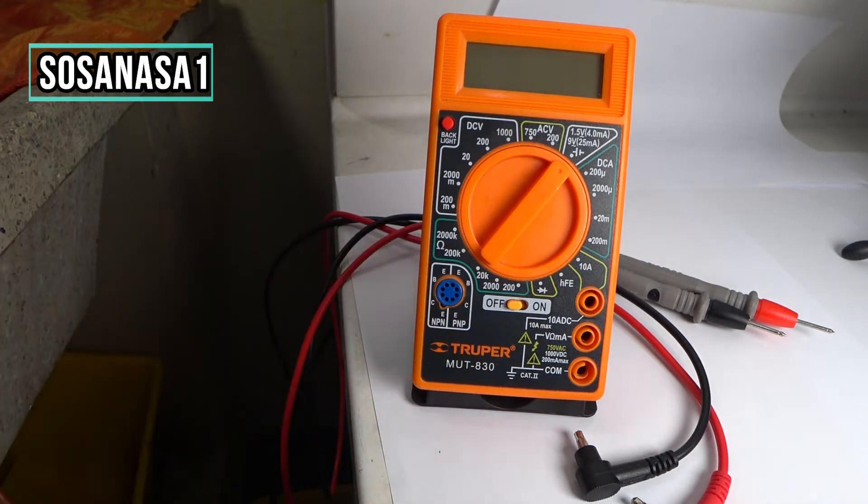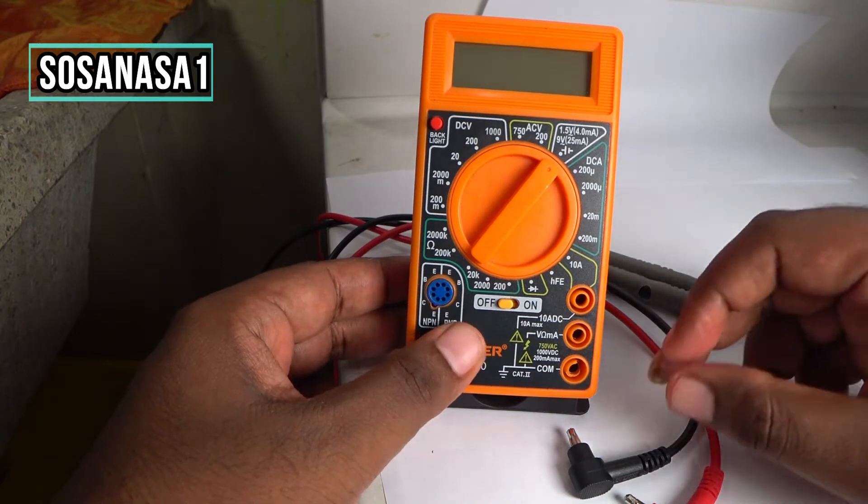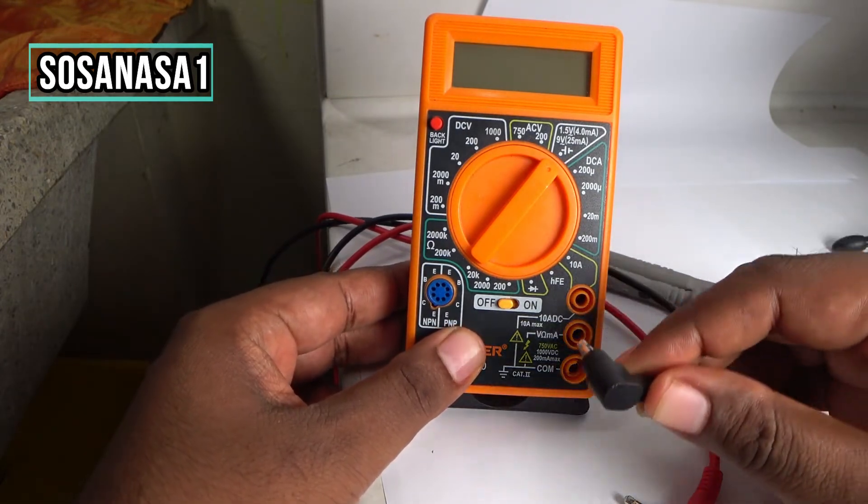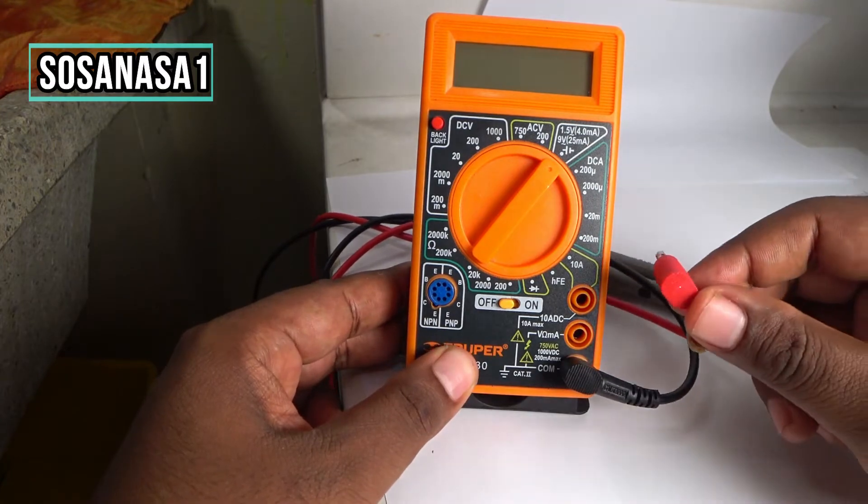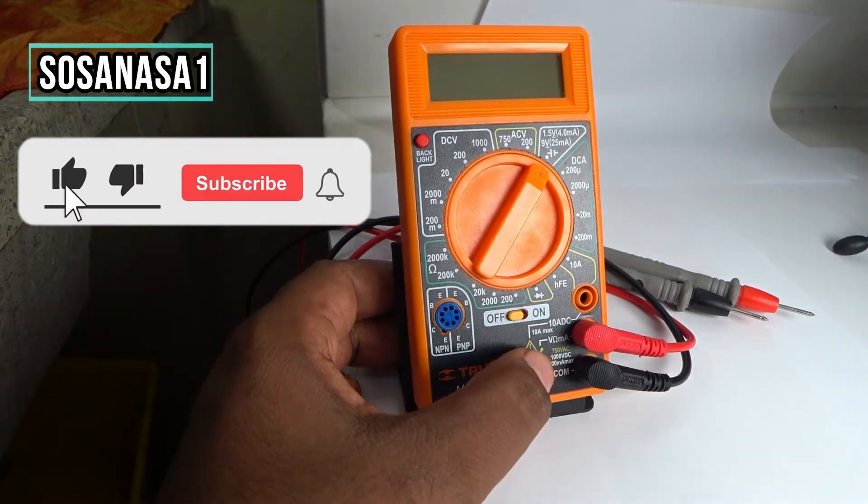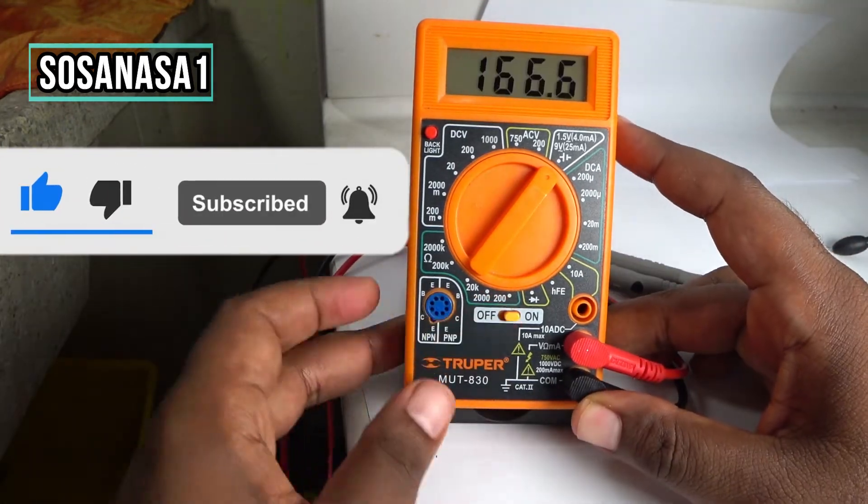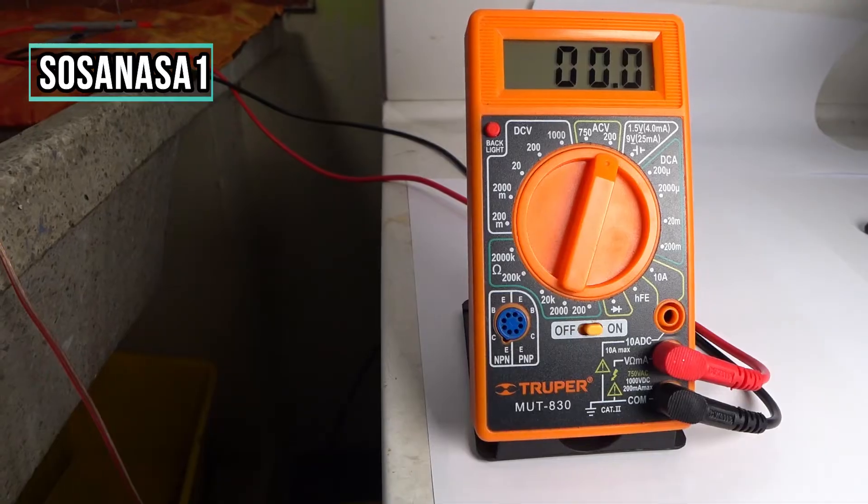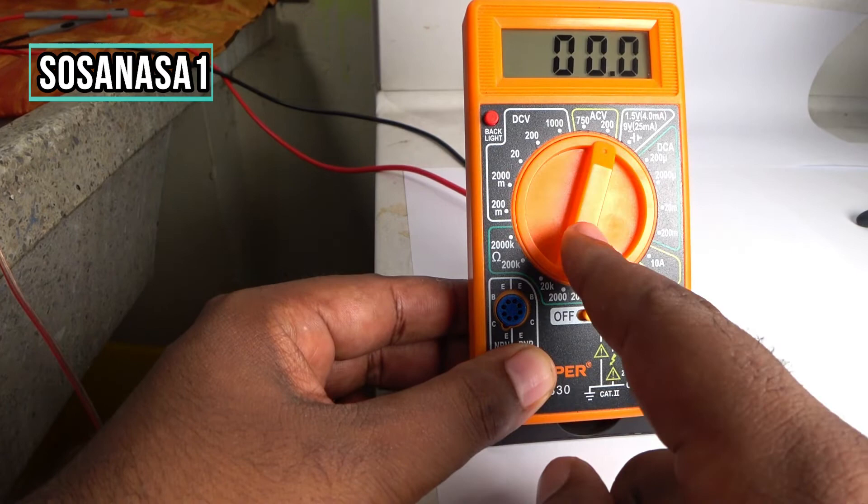Now the first step: connect the negative here in common, and the positive here on volts or milliampere in this part. Good. Now turn on this digital multimeter. Now change with this selector.